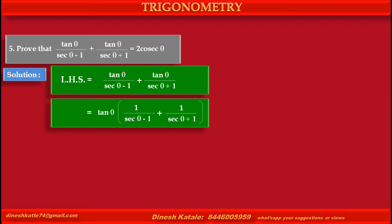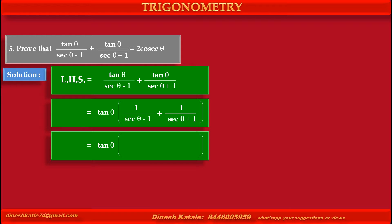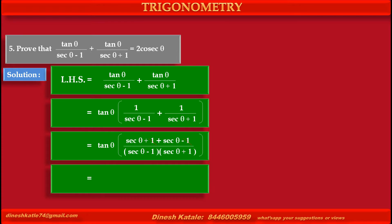Taking common term tan theta, and cross multiplying: the numerator becomes sec theta plus 1 plus sec theta minus 1, where plus 1 and minus 1 cancel each other. The denominator is sec theta minus 1 into sec theta plus 1.